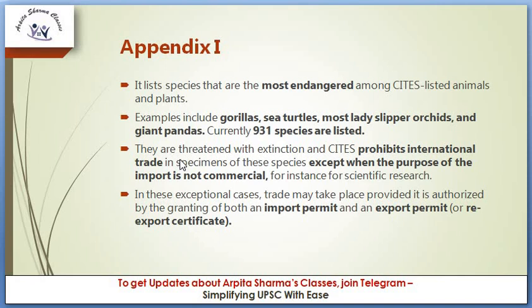In these exceptional cases, trade may take place provided it is authorized by the granting of both an import permit and an export permit or re-export certificate. So if we need to trade in certain Appendix 1 species for scientific research purposes, both the import permit and export permit must be provided. This is the licensing system we were discussing.